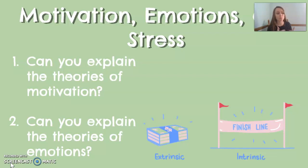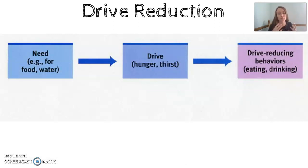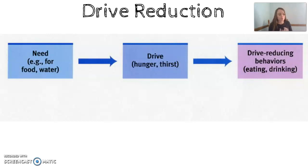The first is a biological approach to motivation called the Drive Reduction Theory. The progression works like this: there is some kind of biological need your body has, and because your body has that need, you start to become uncomfortable. For example, if I am in need of food, my stomach starts to have hunger pains — contractions and gurgling — and it becomes uncomfortable. That discomfort is called a drive.